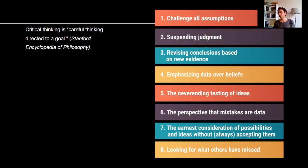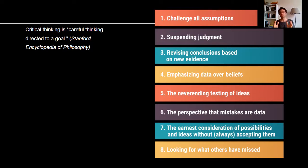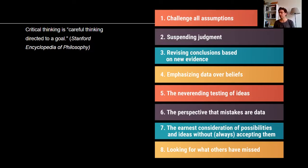The sixth step tells us that mistakes are data. You should learn from your mistakes. Whenever you make a mistake in any practice or judgment, you should take it as information and place it among other data to inform your future judgments. The seventh step tells us the earnest consideration of possibilities and ideas without always accepting them — you should be sincere with yourself, always testing and reconsidering your assumptions and ideas.